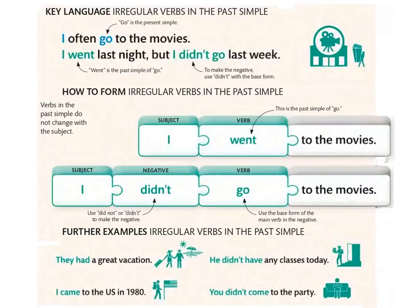For negatives in the past: I don't go في الpresent، ولكن في الماضي نستعملوا did not. الdid هو اللي يتصرف — نحطوه قبل الفعل، والفعل الرئيسي يقعد في base form. So: I didn't go last week — ما مشيتش الجمعة اللي فاتت.